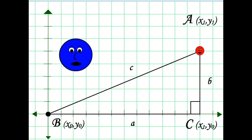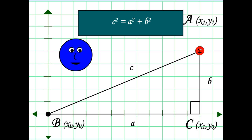Now we need to recall the Pythagorean theorem. The square of the hypotenuse of a right triangle, represented by the letter C, is equal to the sum of the squares of the two opposing sides, represented by the letters A and B. Or C equals the square root of A squared plus B squared. That's great, but how do I know what A and B are?